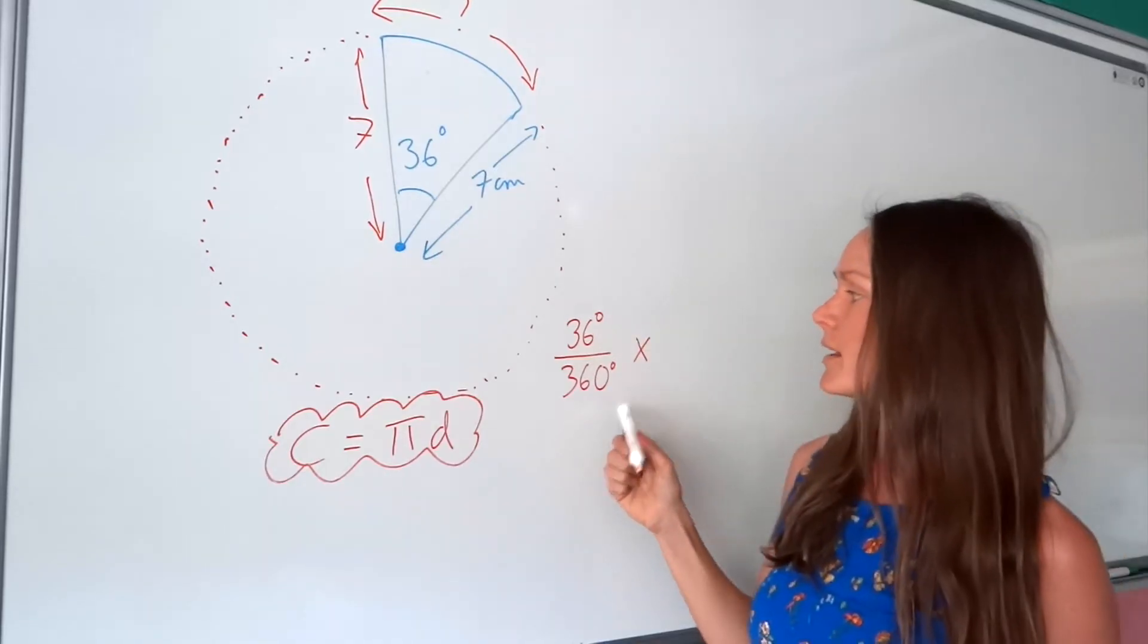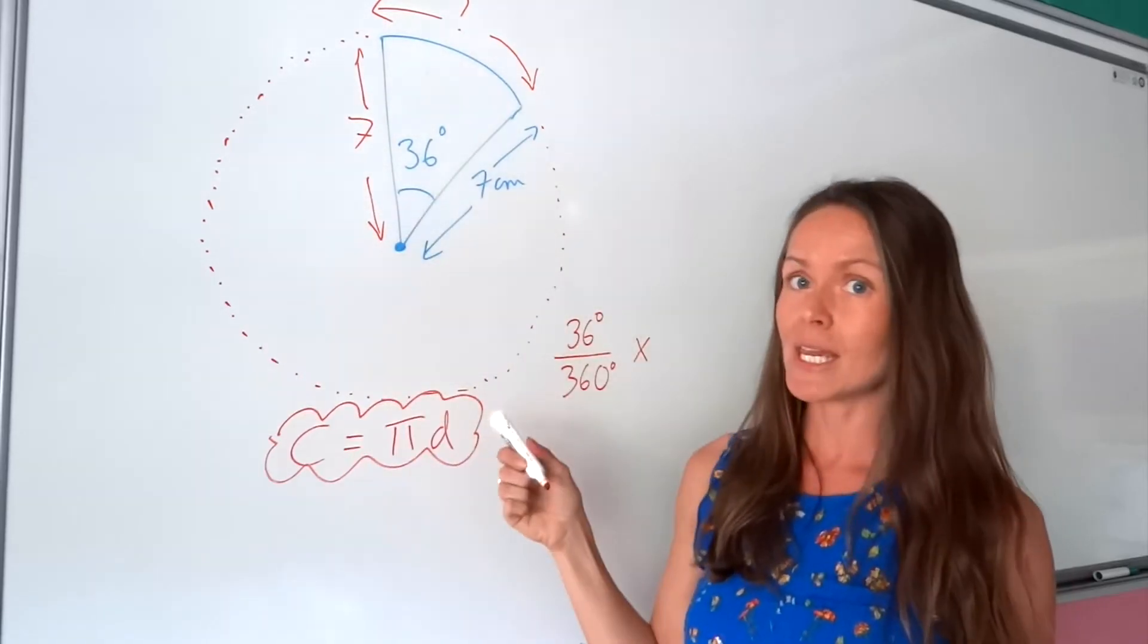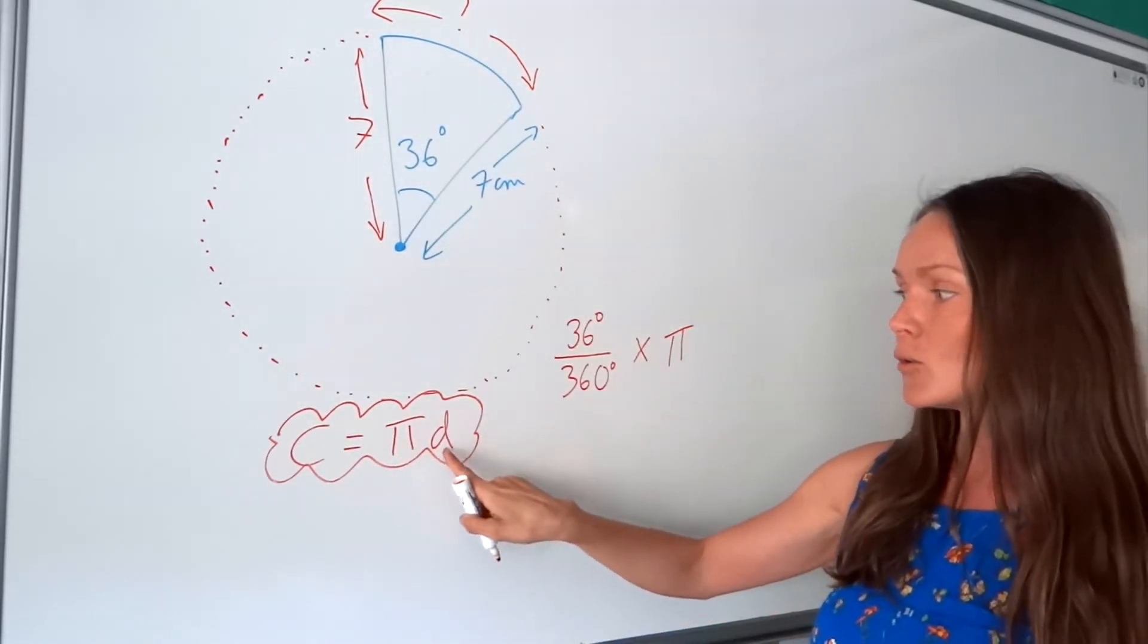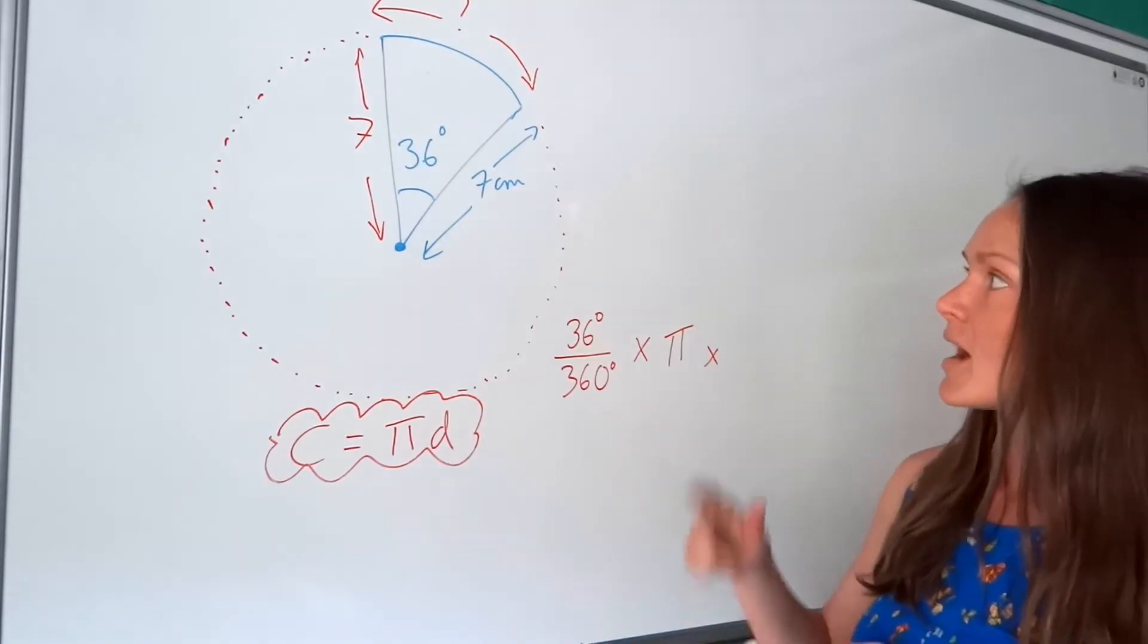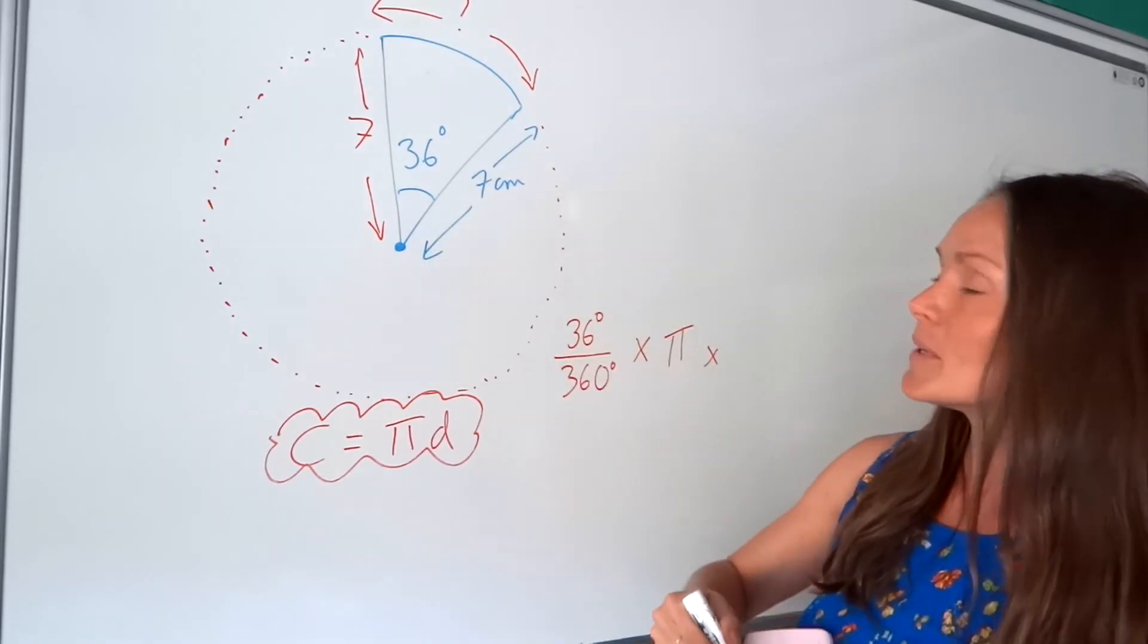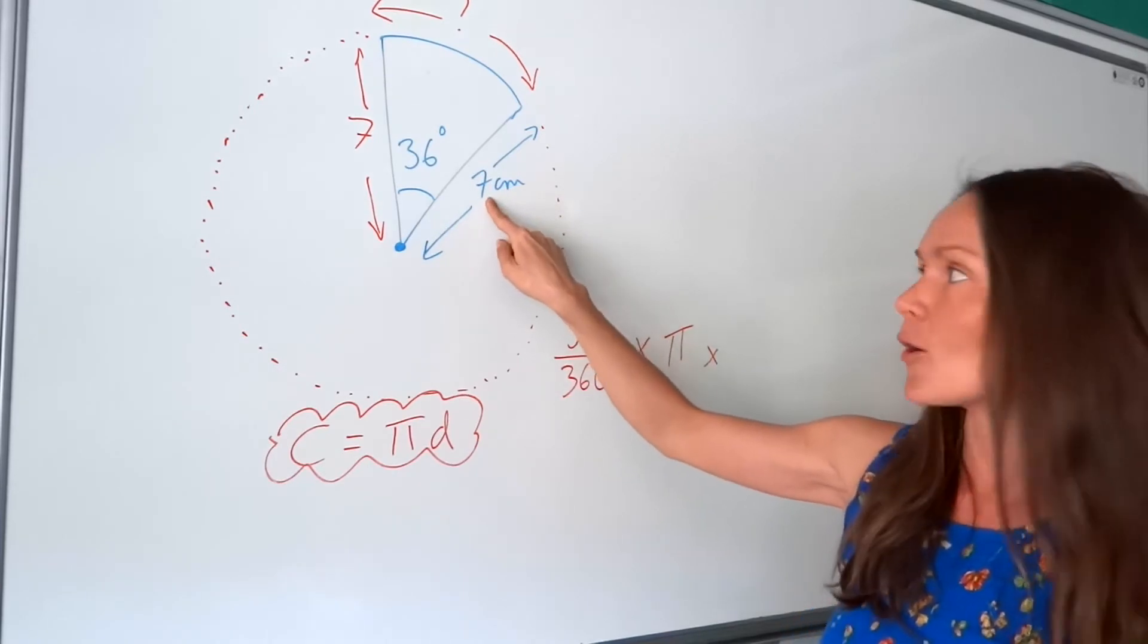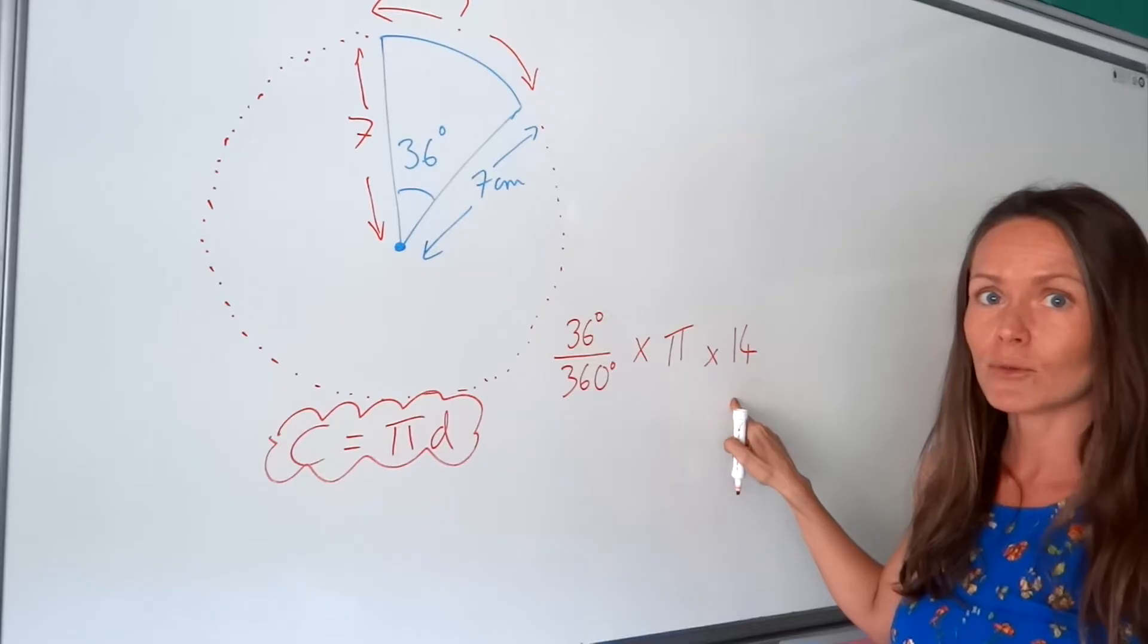And we need to multiply that fraction with the circumference of this circle here. So I need to multiply by pi and I also need to multiply by the diameter. The diameter has not been given. Remember, this is just the radius. And the diameter would be double the radius. So 2 lots of 7 is 14. So I need to multiply by 14.